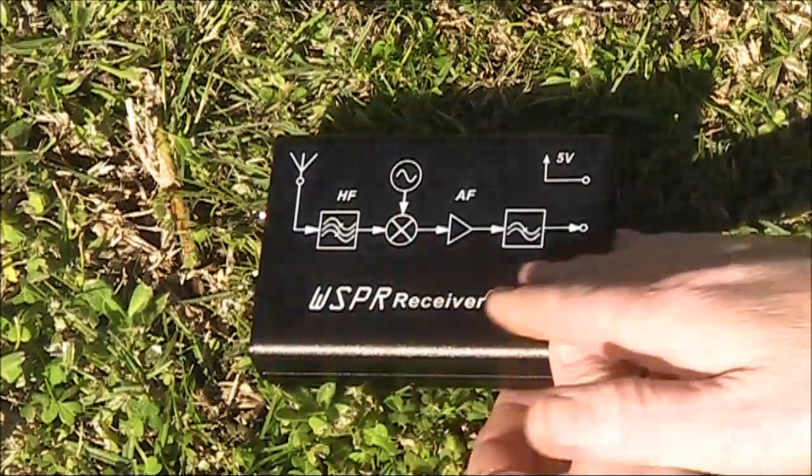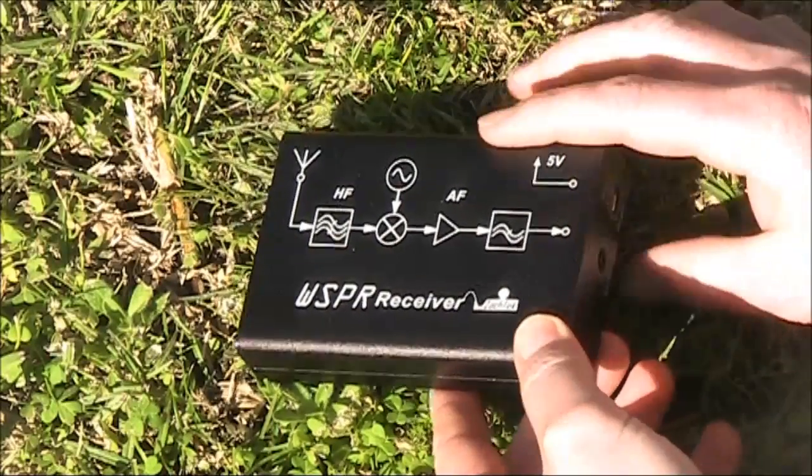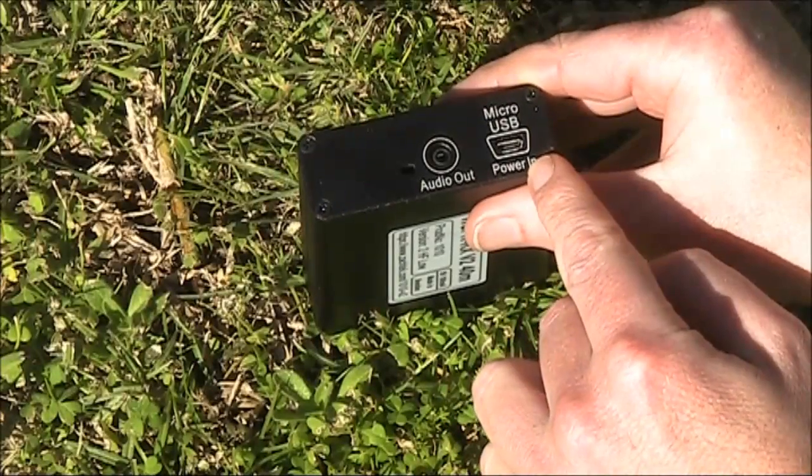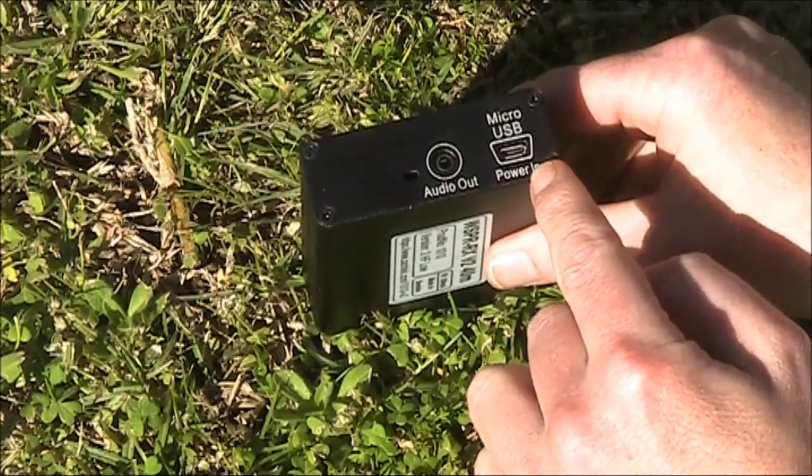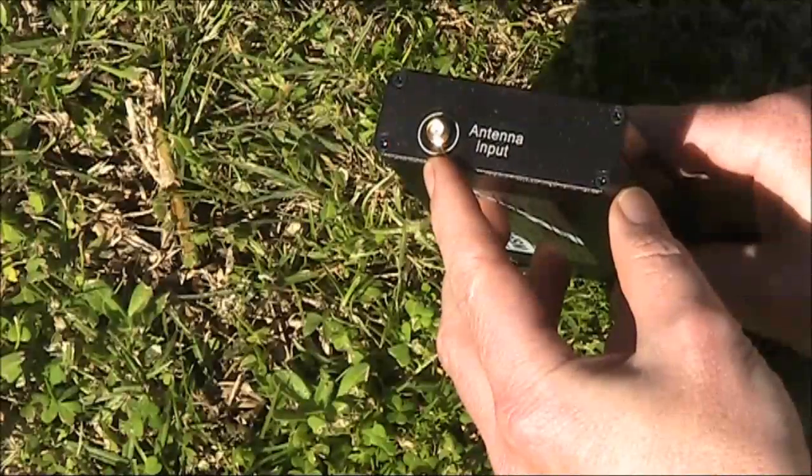A nice touch is the block diagram. The connections line up on the ends. For instance, that's the audio out to the computer, the micro USB power in, 5 volts, and here is the antenna input.